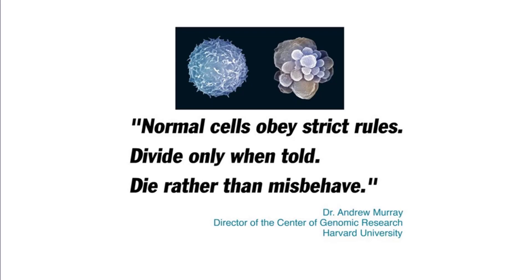This quote by Dr. Andrew Murray from Harvard really sums it up nicely: in a multicellular organism like an animal, normal cells obey strict rules. They divide only when told, and they would rather die than misbehave. Under normal circumstances, multicellular organisms have molecular mechanisms that cause cells to undergo programmed cell death if they are behaving abnormally and could pose a danger to the organism. We discussed this in our cell signaling discussion — the mechanism for that is apoptosis. But how is this accomplished? What controls and checkpoints ensure that cells behave and don't divide out of control?